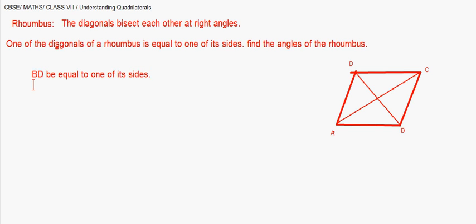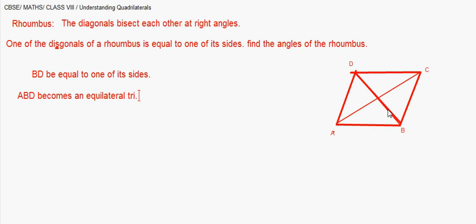That means AB = BC = CD = DA = BD. Therefore, since BD equals AD and AB, triangle ABD becomes an equilateral triangle. Similarly, triangle BCD also becomes an equilateral triangle.